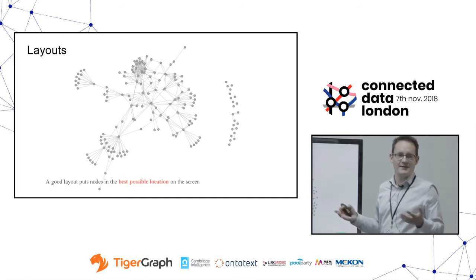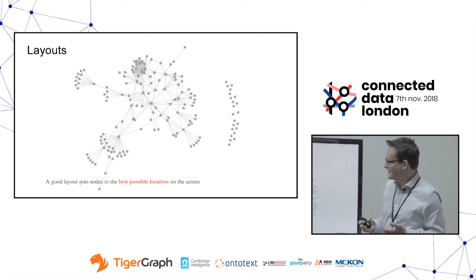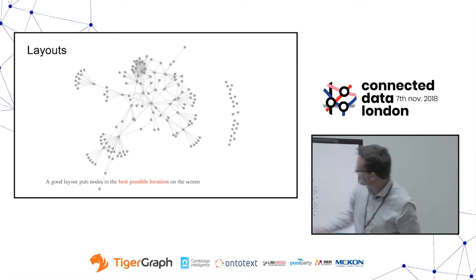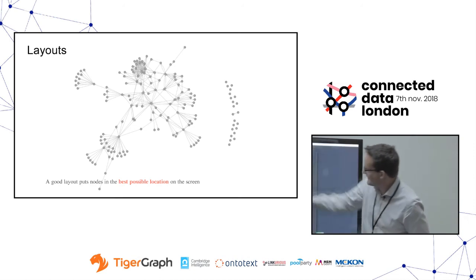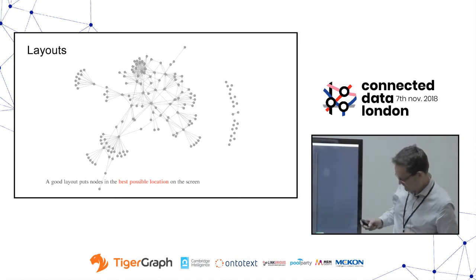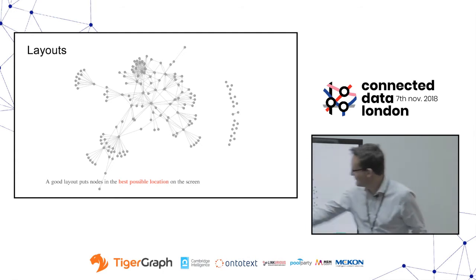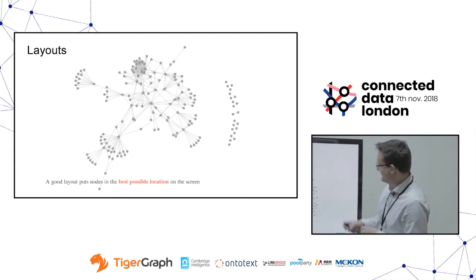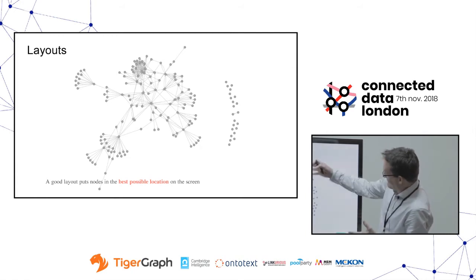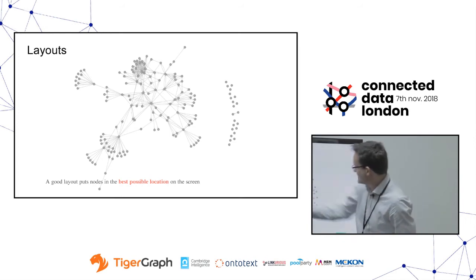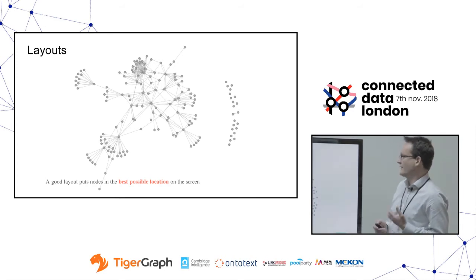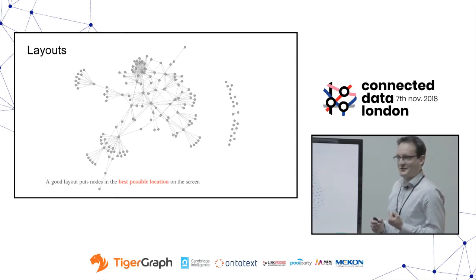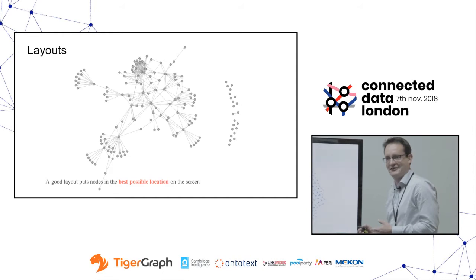That's a very subjective thing — what is the best possible location on the screen really depends on what you're trying to do. This layout is kind of good because it tells me that these nodes up here are interconnected and have a cluster going on, and this one down here is really isolated from the rest of the group. A good layout tells you stuff — it tells me this node is very central, these others are completely isolated, and so on. Layouts get more interesting the more data you have. It's very easy to do a bad layout; it's very hard to do a good one.